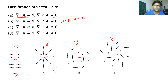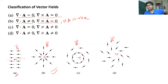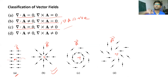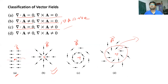For image C, the vector A is rotating, so for any rotational vector, divergence is zero because whatever comes in also goes out. Curl is non-zero because the field is rotating; its direction, by the right-hand rule, points into the screen. For the last image D, the vector is both diverging outward and rotating, so in this case both the divergence and curl are non-zero.